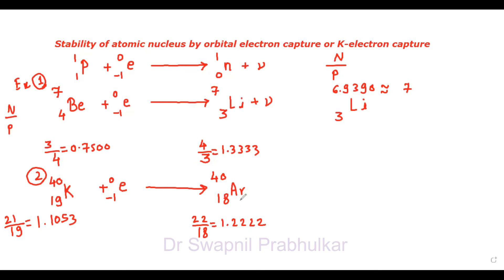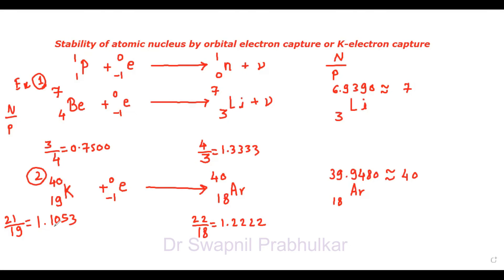Can we take this as a stable atom? The stable argon with atomic number 18 has atomic mass 39.9480, which can safely be taken as 40. Therefore argon is stable. Was our potassium-40 stable? No, it was unstable because stable potassium must have atomic mass 39.102 — approximately 39 — meaning potassium-40 had one extra atomic mass unit. Therefore it was unstable. The neutron to proton ratio has increased and stability is attained by orbital electron capture or K electron capture.